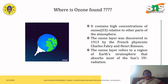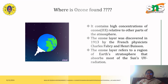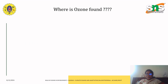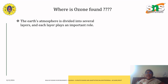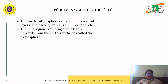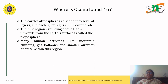Before closing off the session, I'd like to add why this ozone is really important and how it is found. The Earth's atmosphere has been divided into several layers and each layer plays an important role. The first region extending about 10 kilometers upwards from the Earth's surface is known as the troposphere, where many human activities like mountain climbing, gas balloons, and smaller aircraft operate.